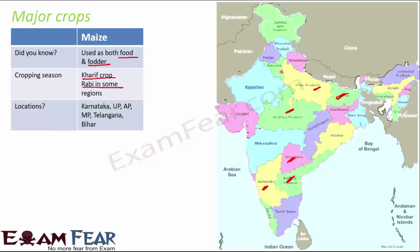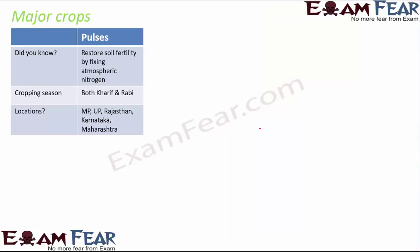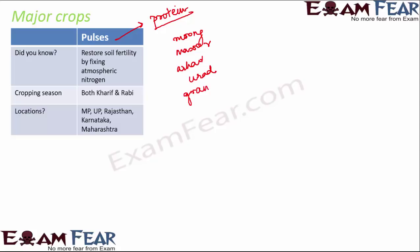Using modern techniques, maize production has increased significantly, giving us baby corn, sweet corn, and makai ki roti. Next, pulses are very important as a great source of protein, especially for vegetarians. There are many types — moong dal, masoor dal, arhar dal, urad dal — and many different preparations.